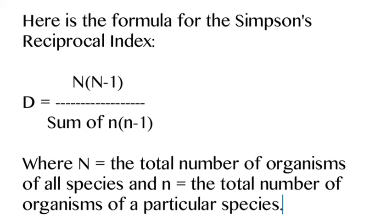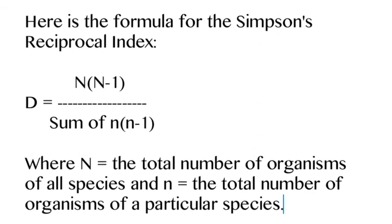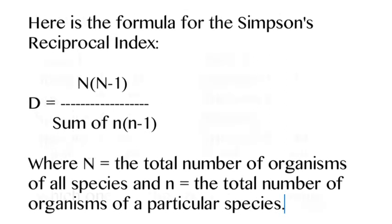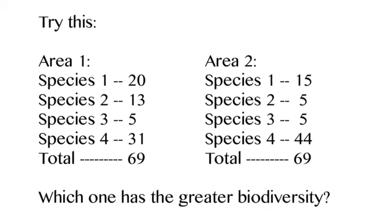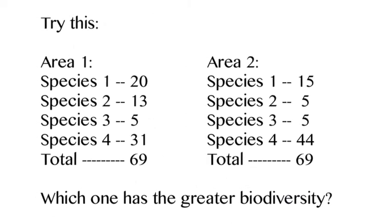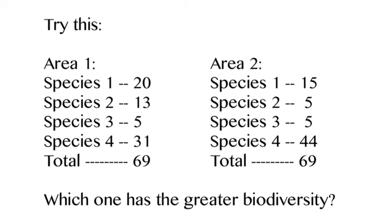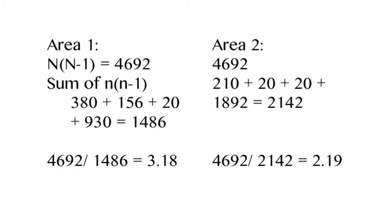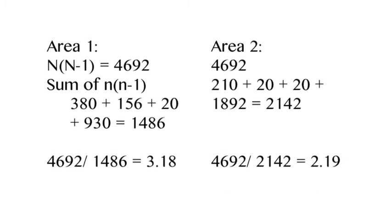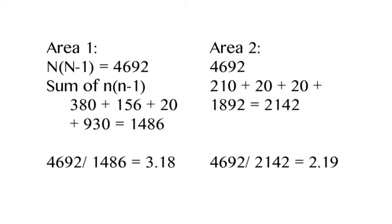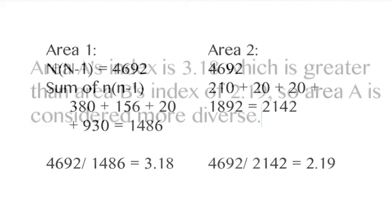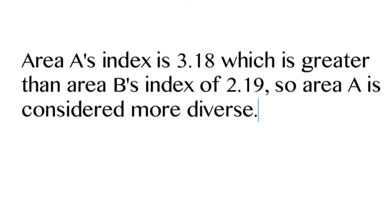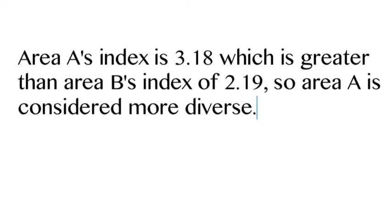Here's the formula — you should stop and write this down. Big N is the total number of individuals in the area across all species. Little n is the number of individuals of each species — so the number of squirrels, the number of rabbits, and so on. If I give you these numbers and ask which area is more biodiverse, you might notice they have the same species diversity. The key difference is abundance — when you do the math, Area A has an index of 3.18 and Area B has an index of 2.19, so Area A is more diverse.